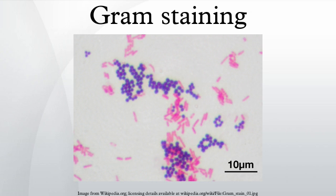Gram indeterminate bacteria, also known as Gram variable bacteria, do not respond predictably to Gram staining and therefore cannot be determined as either Gram positive or Gram negative. They tend to stain unevenly, appearing partially Gram positive and partially Gram negative, or even unstained. Staining older cultures can lead to false Gram variable results, probably due to changes in the cell wall with aging. Gram indeterminate bacteria are best stained using acid fast staining techniques. Examples include many species of Mycobacterium, including M. tuberculosis and M. leprae.